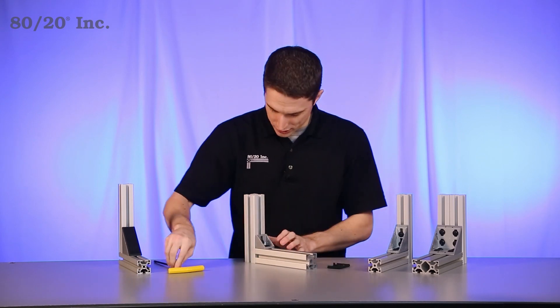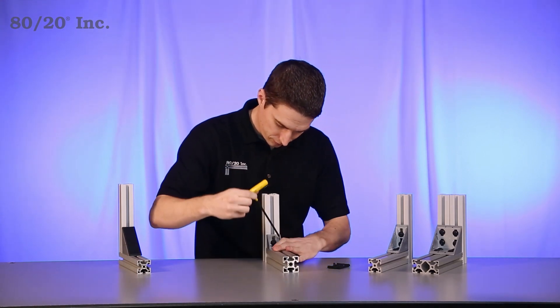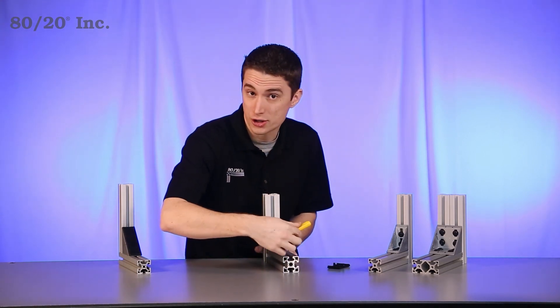Once we have all that lined up, we'll take our wrench and simply tighten down the bolts. From here, we have a strong, secure external connection.